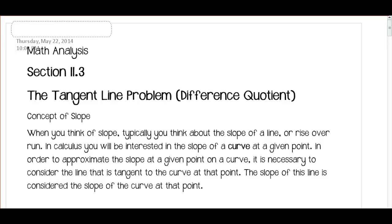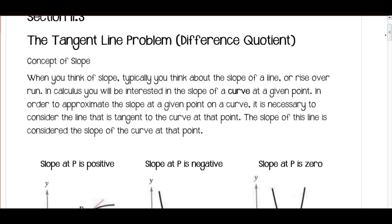We're going to be looking at the tangent line problem, which is also going to be our difference quotient. If you remember from algebra the concept of a slope, typically when you think about slope, you think about the slope of a line, or rise over run. That's usually how we think of it. With a line, you have a single slope.